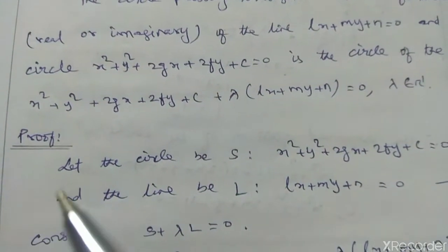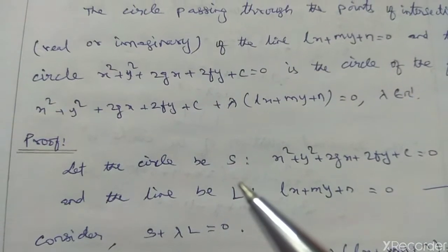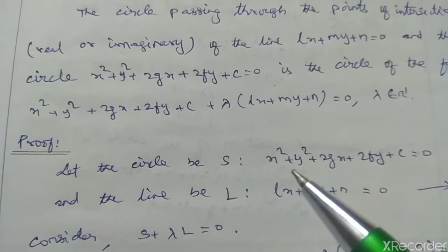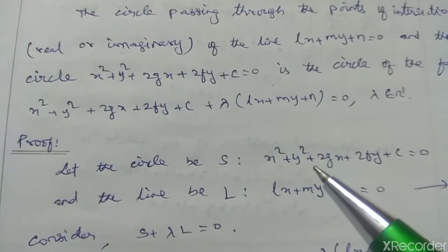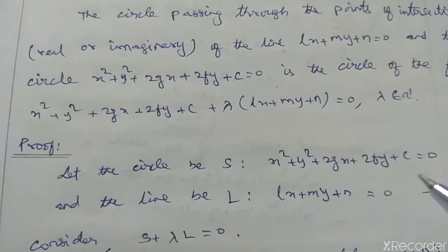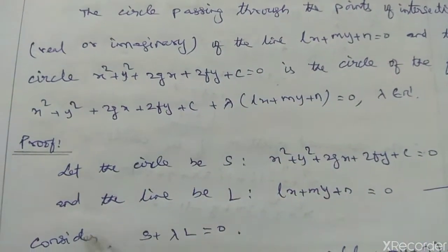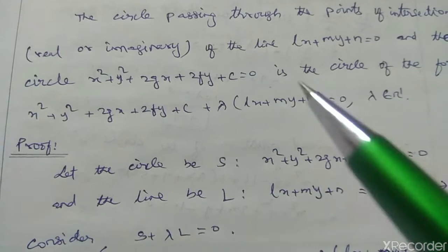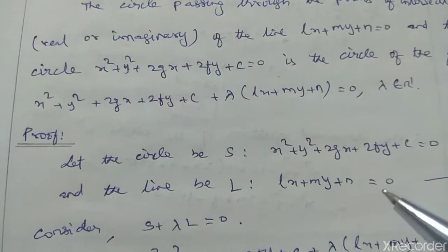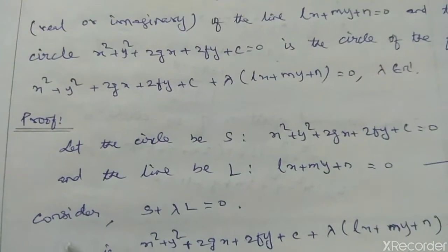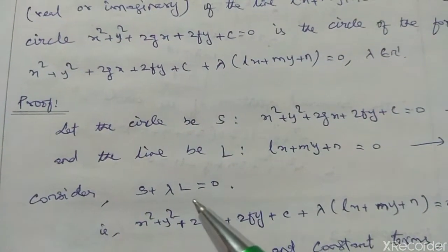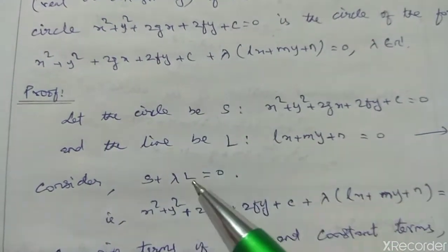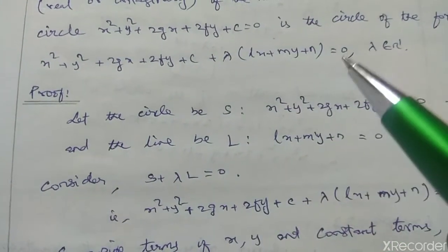Proof. Let the circle S be x² + y² + 2gx + 2fy + C = 0 and the line L be Lx + My + N = 0. Consider S + λL = 0.